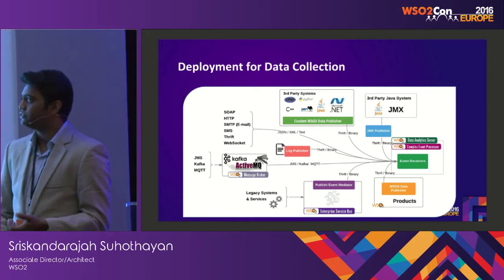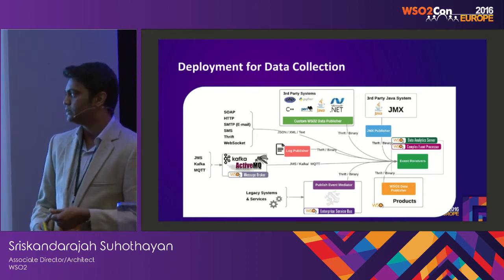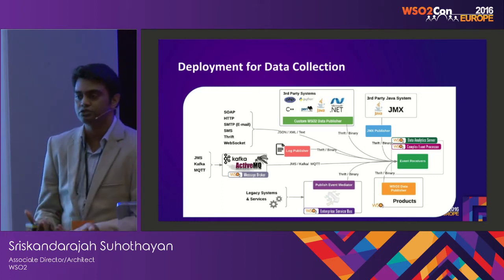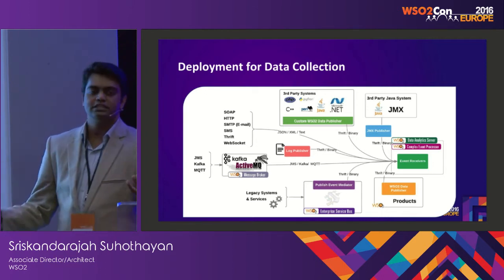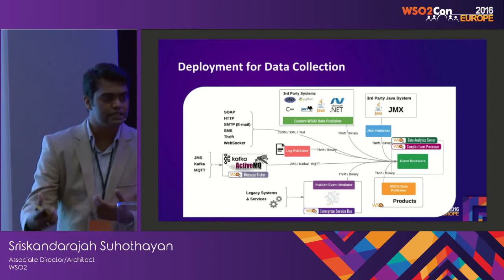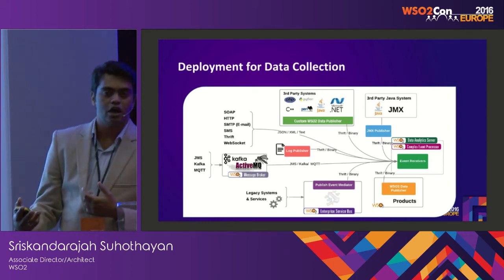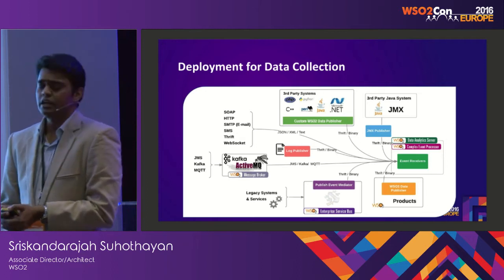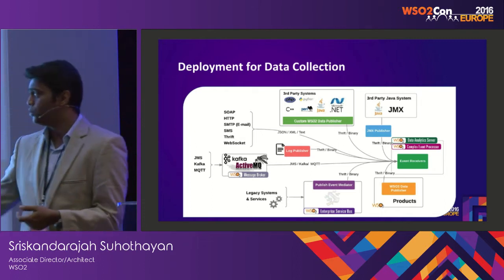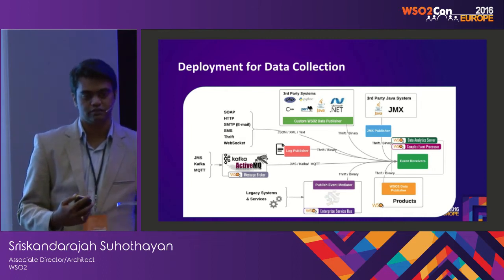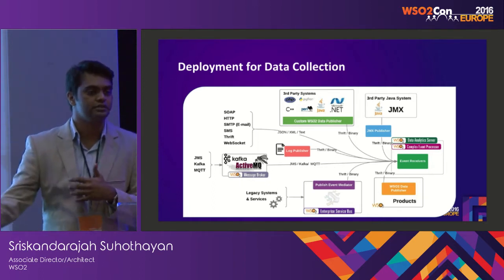For example, if you have APIs like SOAP or REST, you can use our receivers for those. Or if there's a capability of pushing into a queue like Kafka, MQTT, or JMS, we can use that as well. In the worst case, if you have a legacy application, you can write a mechanism using ESB to pull data out of it. And if it's a very old legacy application that at least produces logs, we can use our log publisher to read those logs and publish them for analysis.